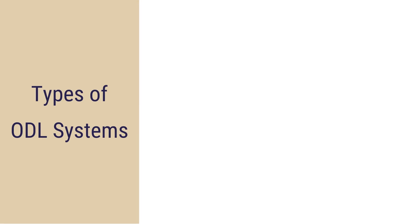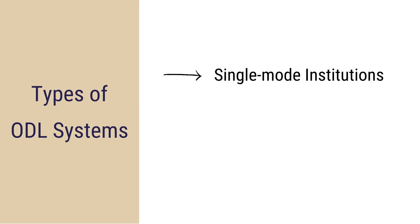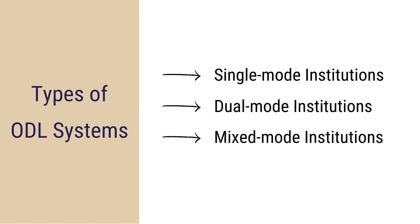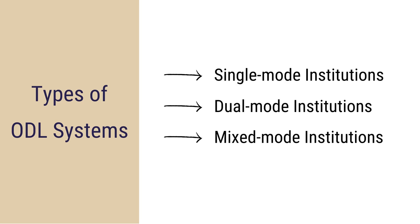Next, we shall talk about the types of ODL systems. There are different types or modes of institutions that function in the ODL system. There are single mode institutions, dual mode institutions, and mixed mode institutions. We shall know more about them and see a few examples of these types.